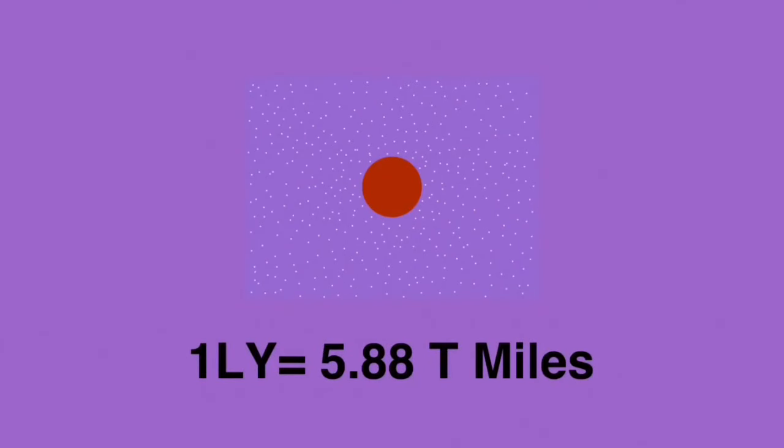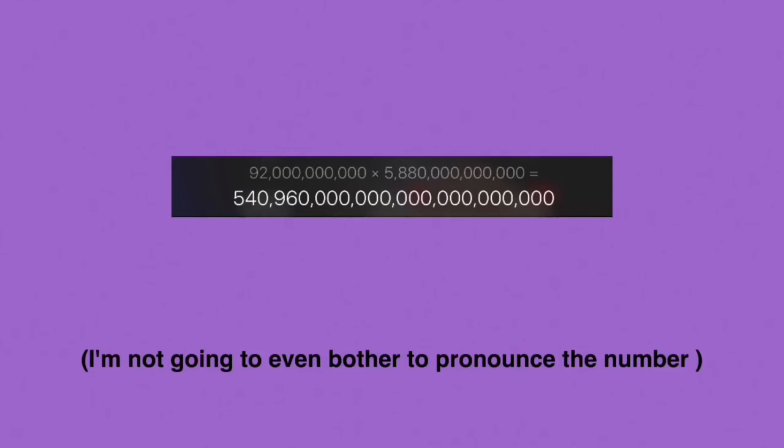So we now know that one light year is about 5.88 trillion miles, and the universe is about 93 billion light years wide. And when we multiply those two numbers together, we get this. Yup, that's the measure of the universe in miles.